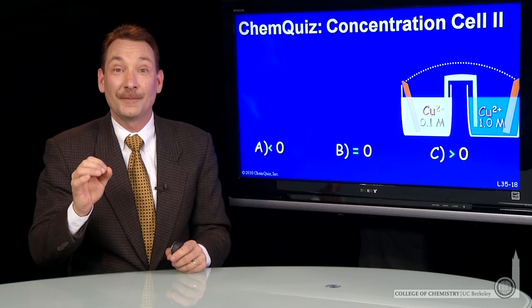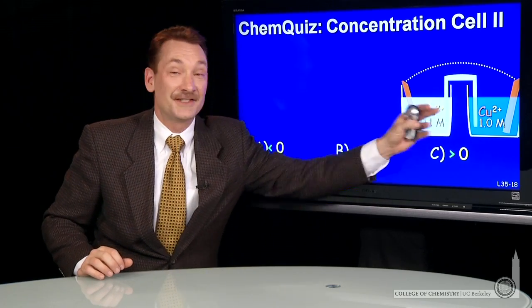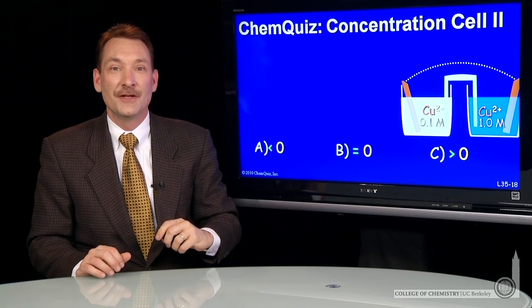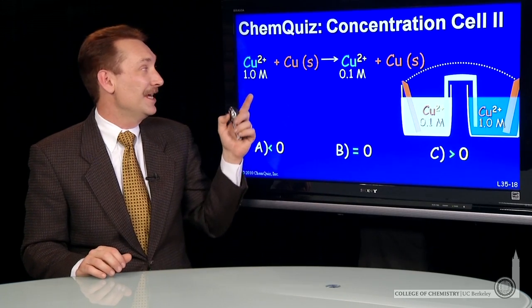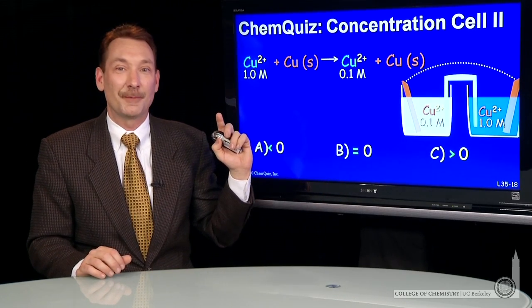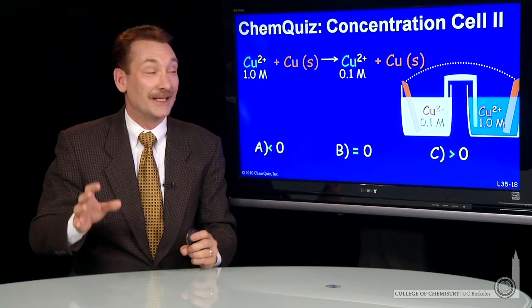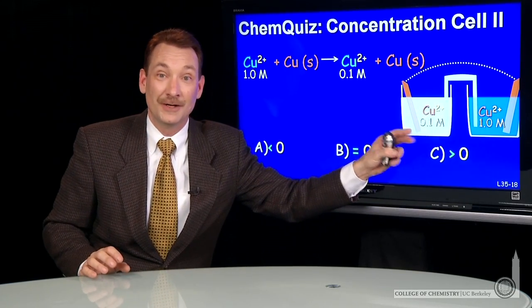We're looking at a cell where the difference is the concentration of the ions on either side. So the overall cell reaction is just high concentration copper going to low concentration copper. And we know intuitively, if we were to mix these two, that's what would happen.